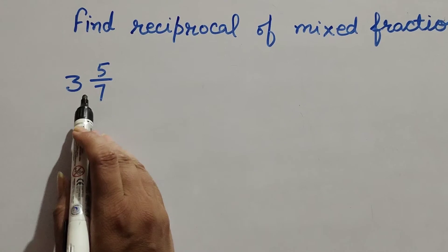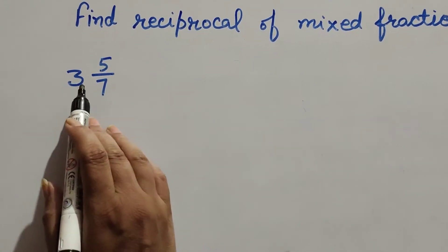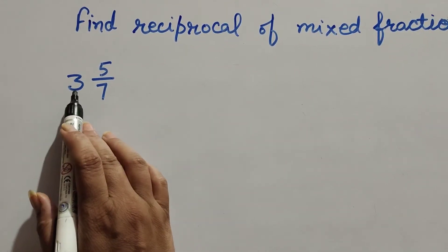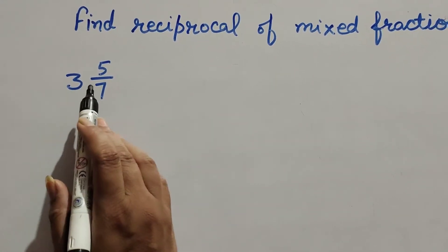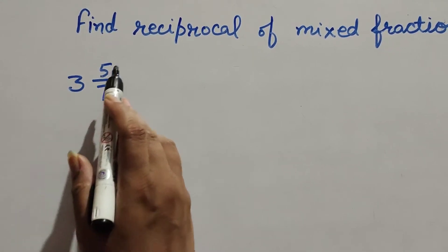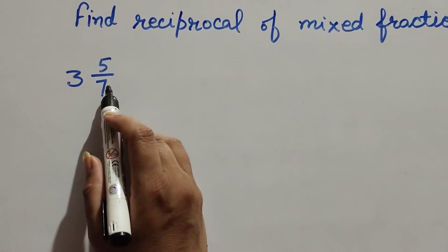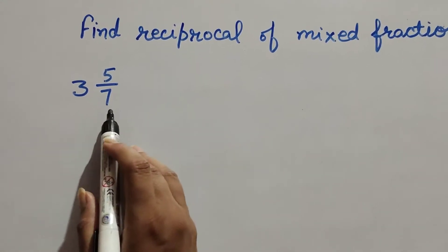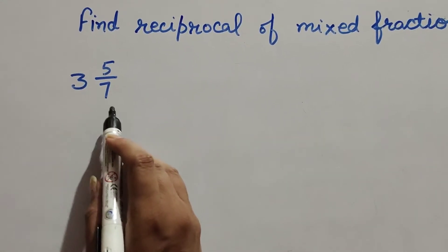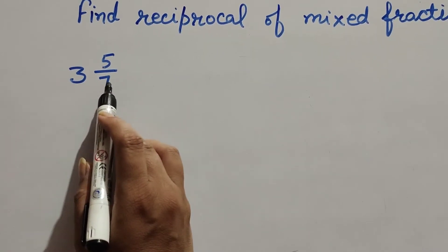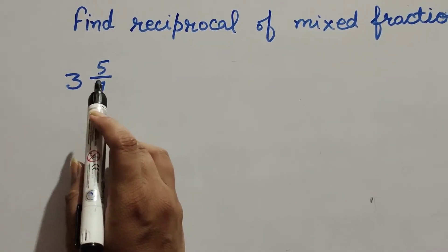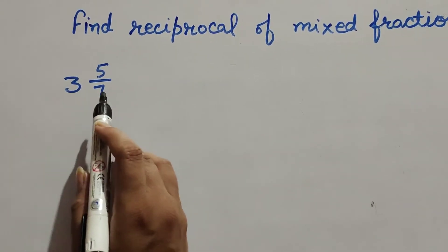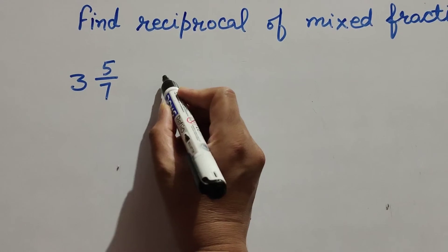The mixed fraction given is 3 and 5/7, where 3 is the whole number and 5/7 is the fraction. We will find the reciprocal of this mixed fraction by first simplifying it into an improper fraction.